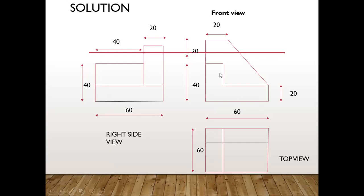Then draw another horizontal line parallel to the base reference line towards the left side direction — 40mm. This overall length is 60; 60 minus 20, the remaining distance will be 40. Then draw a vertical line for 20mm. So 40 minus 20, you get the remaining side for 20. Draw a vertical line for 20. Then draw a horizontal line for another 20mm. Then 40mm — draw a downward vertical line towards the downward direction for 40mm.